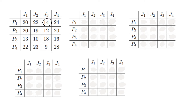So we have: 20 minus 14 gives us 6, then 22 minus 14 gives us 8, then 14 minus 14 gives us 0, and then 24 minus 14 gives us 10. So there's the first row done.